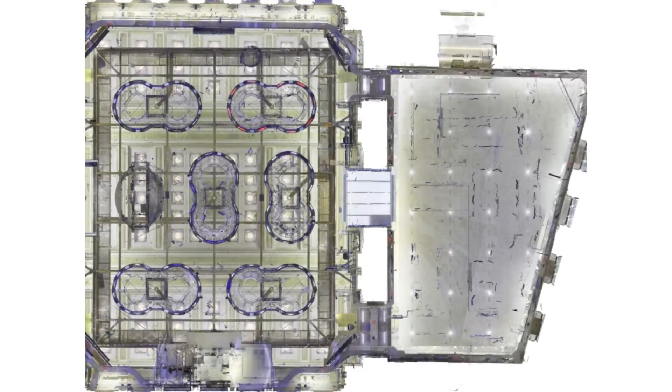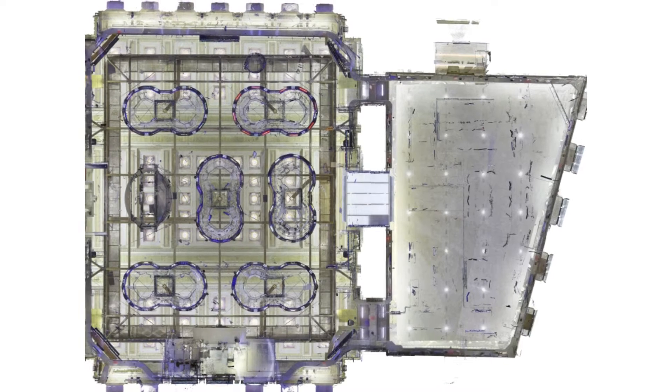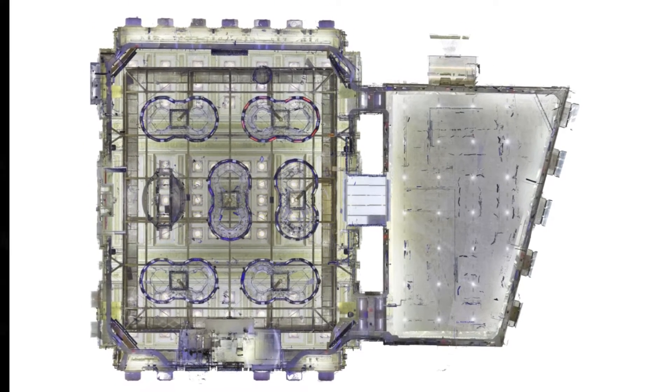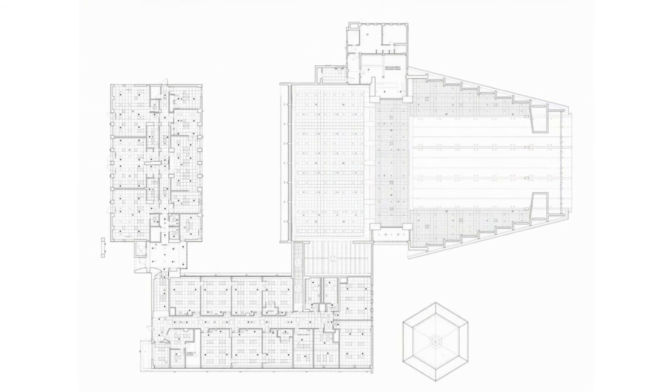A reflected ceiling plan might also include pipe hangers and ductwork, but those items typically fall under a separate deliverable called an MEP plan, as this information requires special scanning and modeling.